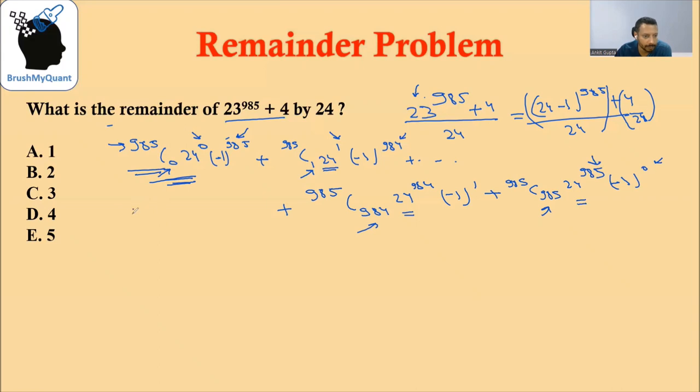If you simplify this, this will become 1. 24 raised to 0 will become 1, and minus 1 raised to 985 will become minus 1.